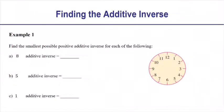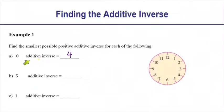Let's practice finding additive inverses. For 8: the additive inverse is whatever adds to 8 to give 12, so 8 plus 4 is 12 — start at 8, go 4 more, and you end up at 12. So 8 and 4 are additive inverses. The additive inverse of 5 is 7 because 5 plus 7 is 12. And the additive inverse of 1 is 11 because if we start at 1 and add 11, we get to 12.